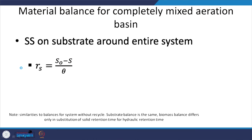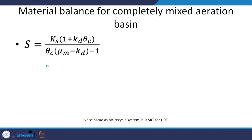By applying the mass balance on S, or the substrate, we got this equation. We also have r_net for the substrate — and why is this negative? Because wastewater is being degraded, that is why it is negative.